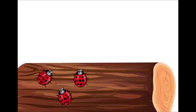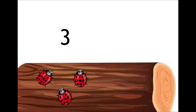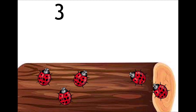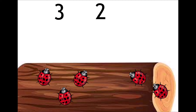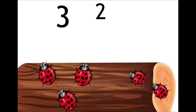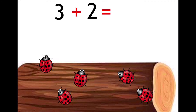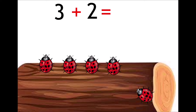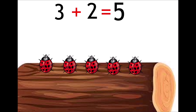Let's go to the next one. Oh look, how many ladybugs do you see? Let's count: one, two, three. There are three ladybugs. Oh look, more ladybugs are coming — one and two, two more ladybugs. So, how many ladybugs are on the log? Three plus two equals one, two, three, four, five. Three plus two equals five. There are five ladybugs on the log. Very good!